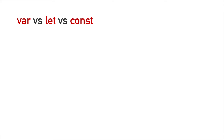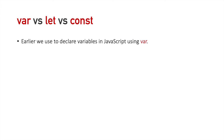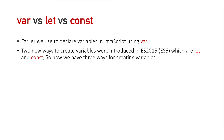Hello friends, in this video we will understand different ways of creating variables in JavaScript. Earlier we used to declare variables in JavaScript using var. Two new ways to create variables were introduced in ES2015, i.e. ES6, which are let and const. So now we have three ways of creating variables, using the keywords var, let, and const.